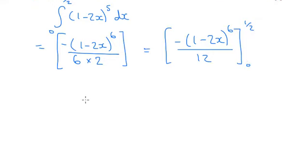So if I substitute my values in now, if we substitute a half in, we're going to get negative (1 minus a half of 2), so 1 minus 1. So that's going to be a 0 in the bracket there. So it doesn't matter if we're dividing, that's just 0. Minus what we get when we put 0 in. So when we put 0 in, we're going to get negative (1 - 0), so that's just 1 to the power of 6, over 12. So all of that, that's nothing. Here we've got minus minus a 12th. So we've got 1/12.